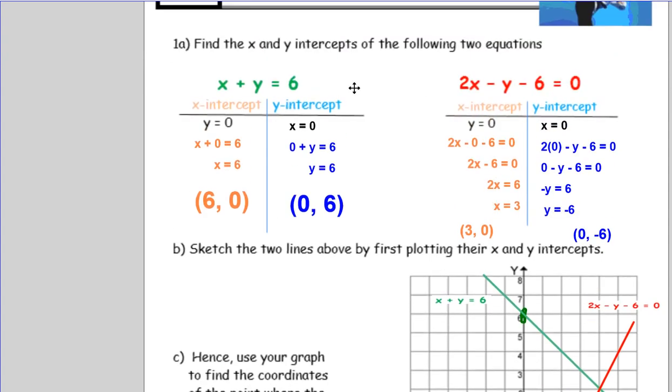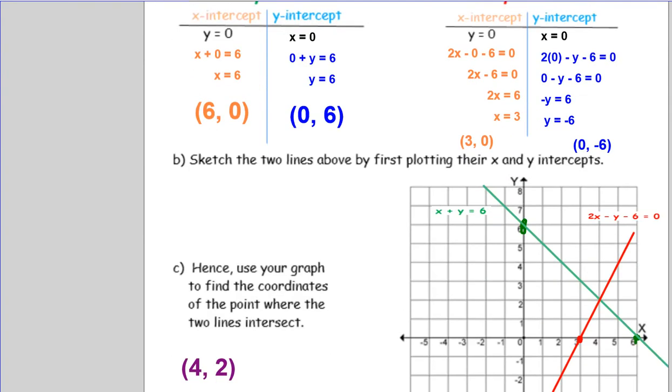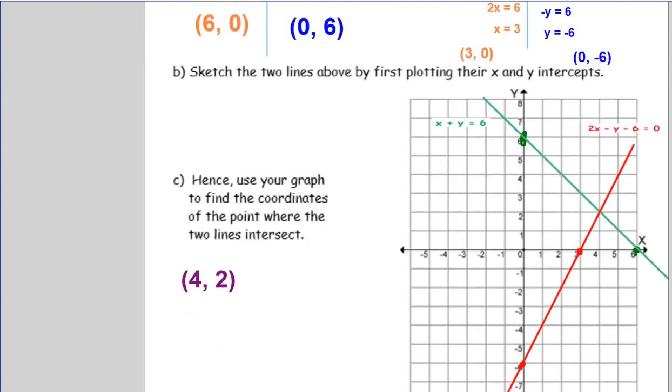Then now I'm going to do this line in red. The x-intercept was three zero. Here's my x-intercept. The y-intercept was zero negative six. And then I just drew a line through that. And as I said, a good idea to label your lines. That's important.